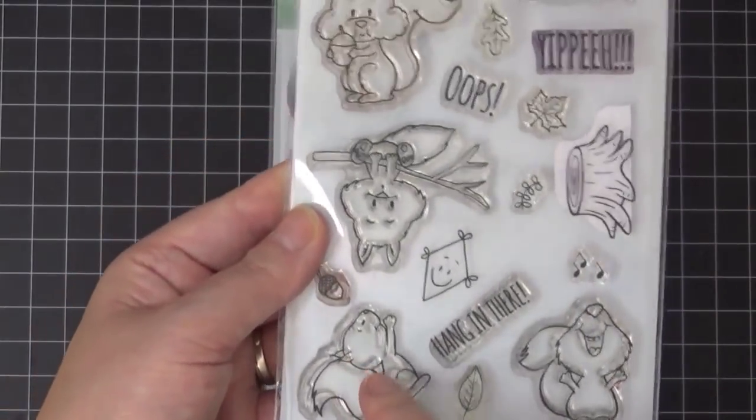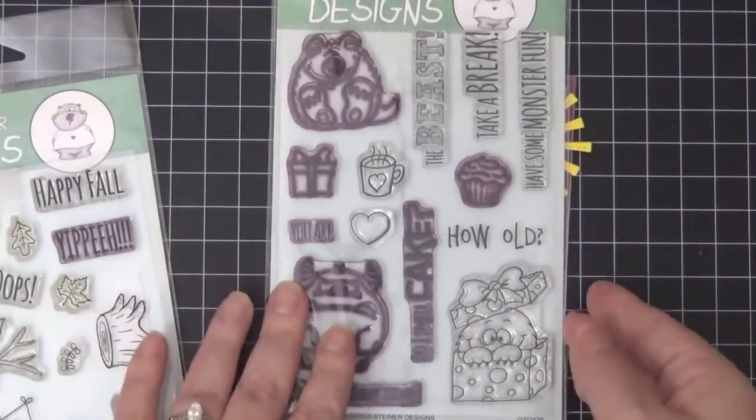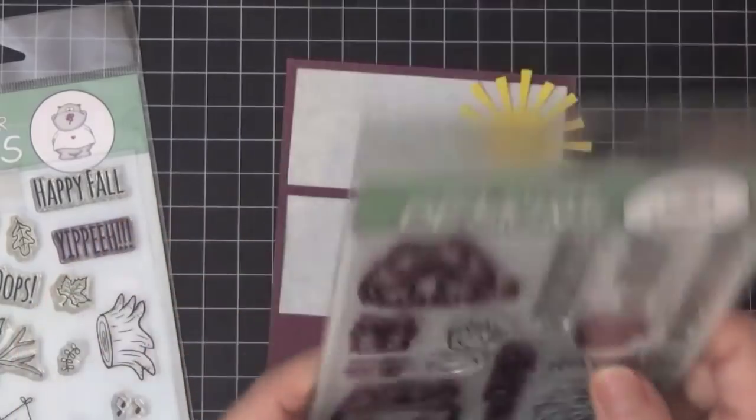The stamp sets that I'll be using is this Happy Fall stamp set and this How Old Sentiment from Monster Party.